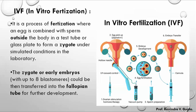In IVF, fertilization means the union of male and female gametes. If fertilization is happening outside the body, the two couples' eggs and sperm are collected and combined in a petri dish. The resulting embryo is then transferred to the uterus of the female. This is called in-vitro fertilization.